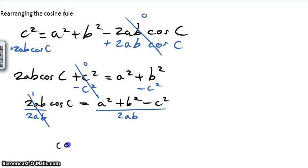This leads us to the final rearrangement, which is cosine c equals a squared plus b squared minus c squared all over 2ab. Done.